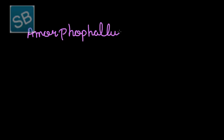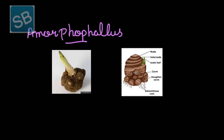Another example is amorphophallus. In amorphophallus, the condensed form of rhizome — the modified stem for storage of food — occurs, which is called a corm. It is a food storage structure made up of only one internode.